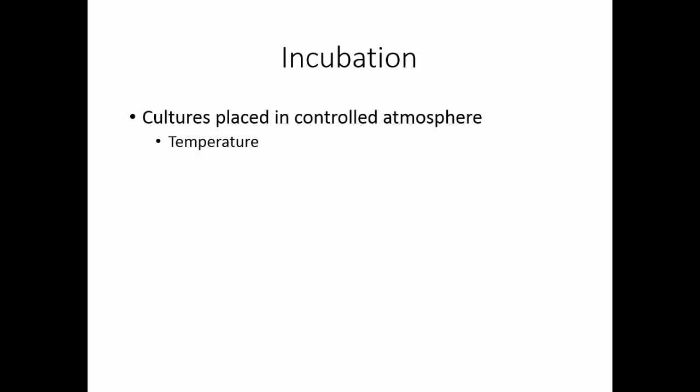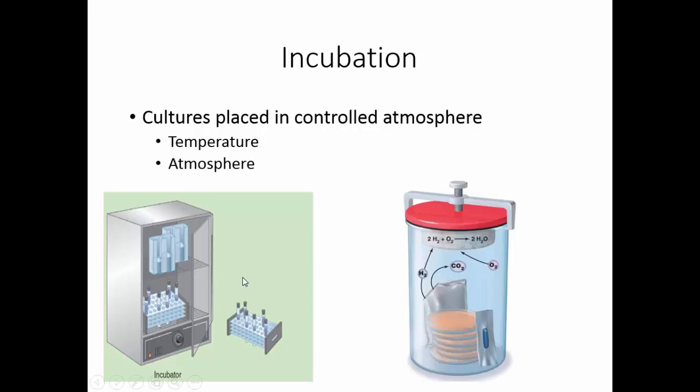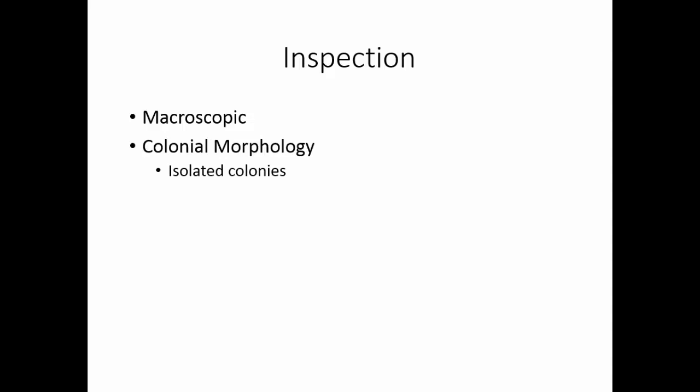Incubation is placing the cultures in a controlled atmosphere — both the temperature and the atmosphere itself need to be controlled. An incubator typically has a controlled temperature, and sometimes we have to provide the organism with a special atmosphere. Once we've grown something, we're ready to inspect it. Macroscopic inspection starts with looking at the colonial morphology. Most clinical specimens are mixed cultures with more than one thing typically growing, and we can separate organisms out using various culturing techniques.